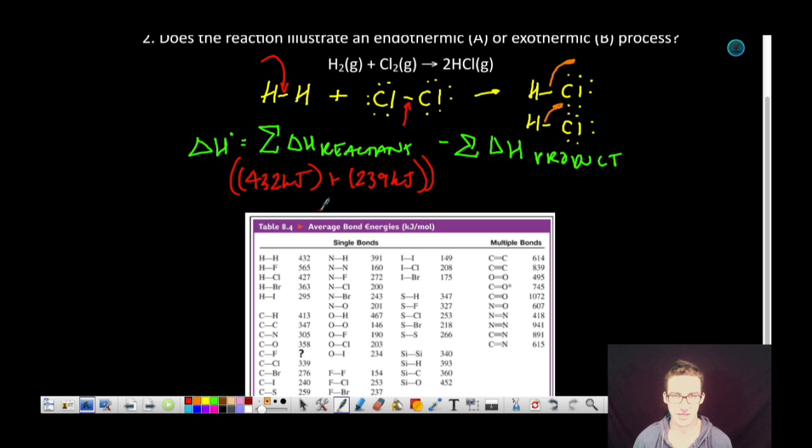That sum is the sum of the energy that needs to go in to break those bonds. We're going to subtract from that the energy released, rather, when those two HCl bonds are formed. So note it's going to be 2 or 2 moles times the 237 kilojoules that's released as those bonds are formed.